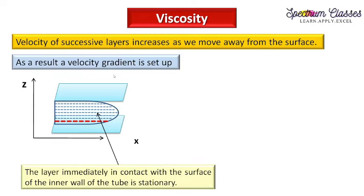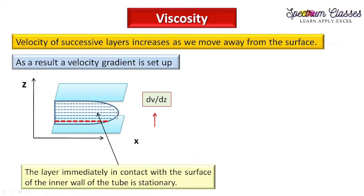The velocity gradient, if x is the flow direction and z is the direction away from the surface, is defined as dv/dz, where v is the velocity and z is the distance moving away from the stationary layer. Since the layers are very close and their velocity changes slightly, the velocity gradient is expressed using differentials. The layer moving at velocity v has the layer above it moving at v + (dv/dz), meaning each successive layer moves a little faster than the previous one, setting up a gradient of velocity.